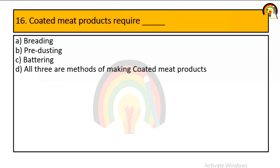Coated meat products require breading, pre-dusting, and battering. All three are methods of making coated meat products, so option D is correct.